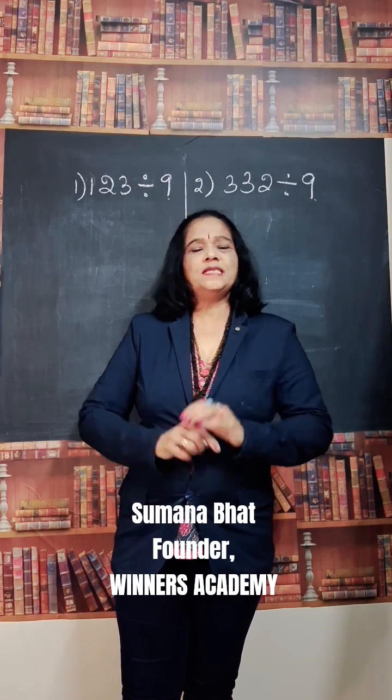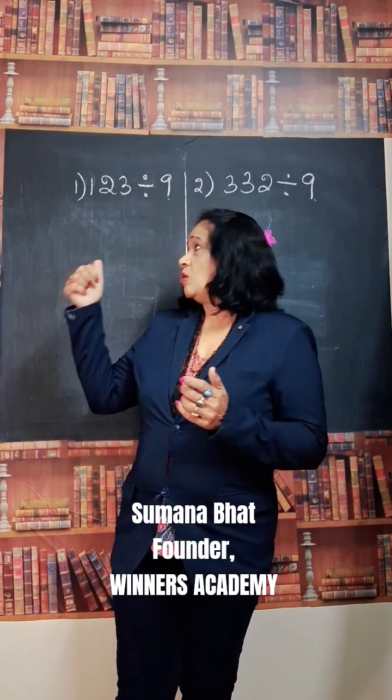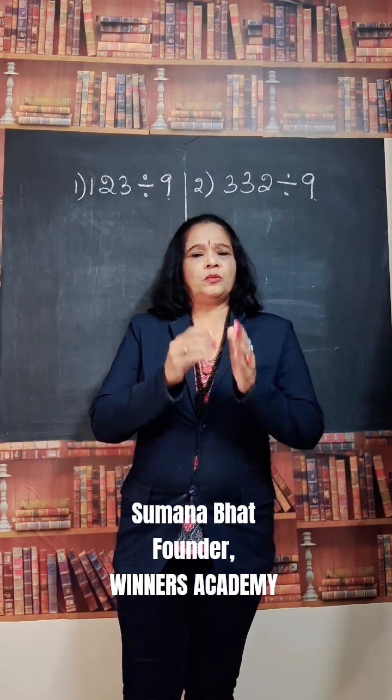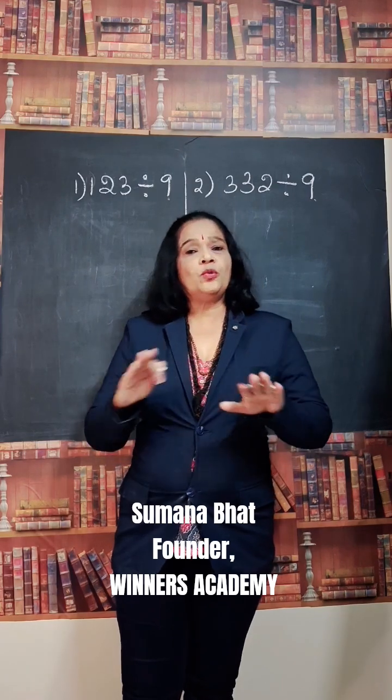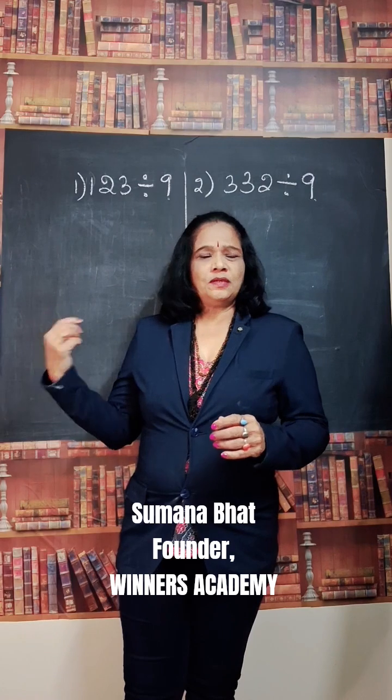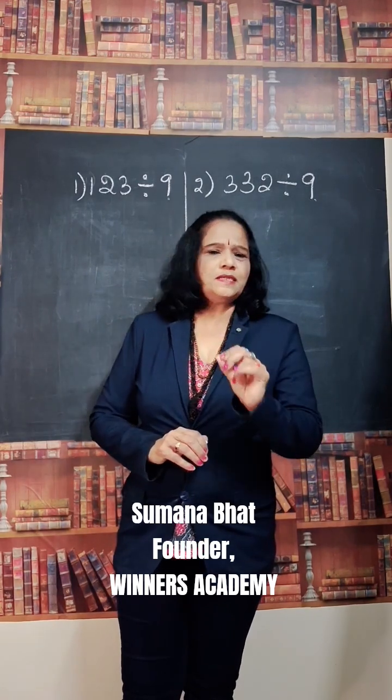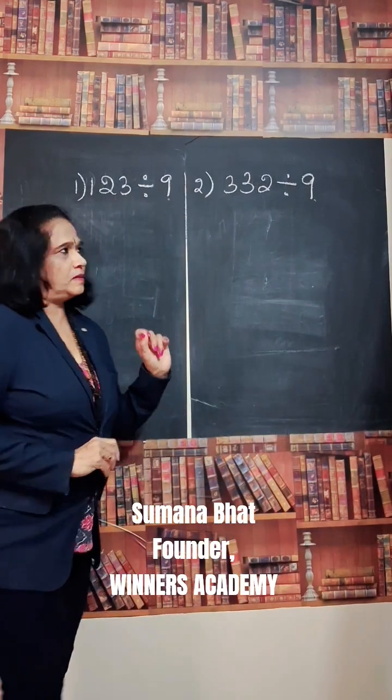This is the very easiest way without knowing the multiplication tables of 9. Without knowing the multiplication tables of 9 and without doing any actual division, we can do the division, we can find the quotient and remainder. This is the easiest way to divide the number in Vedic maths. See how to divide this.